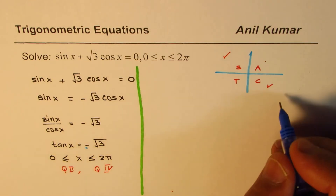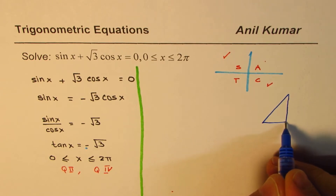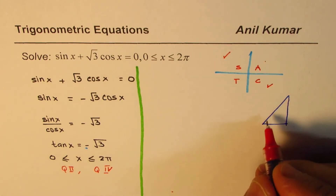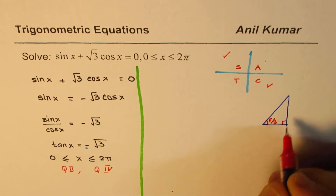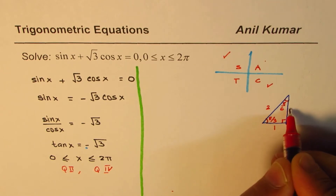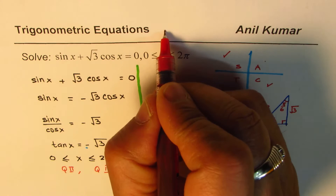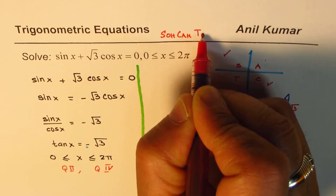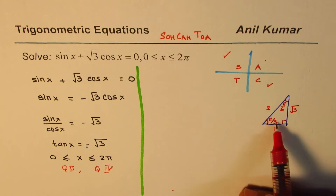To find the acute angle, we can use special triangles, which is a good idea when we need exact answers. If we consider the special triangle with angles pi by 3, 90 degrees, and pi by 6, this triangle has sides 1, 2, and square root 3. Tan, from SOH-CAH-TOA, is opposite over adjacent, so tan of pi by 3 equals square root 3 over 1, which is square root 3.